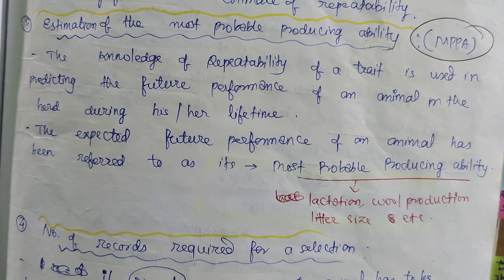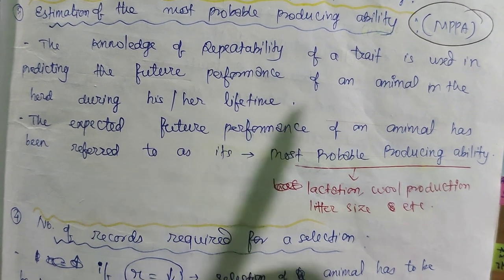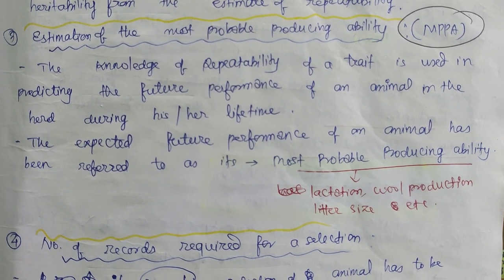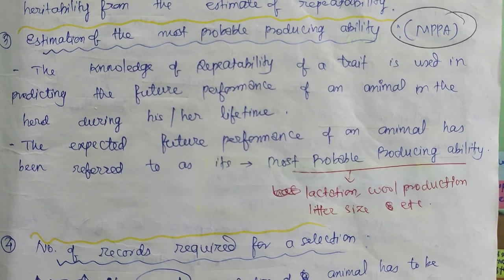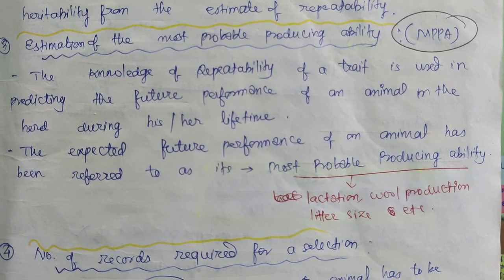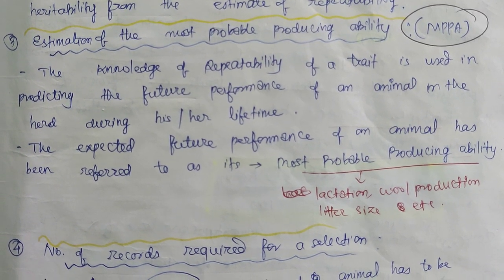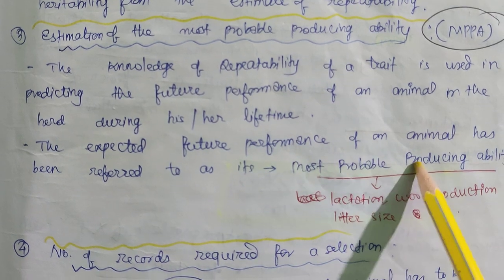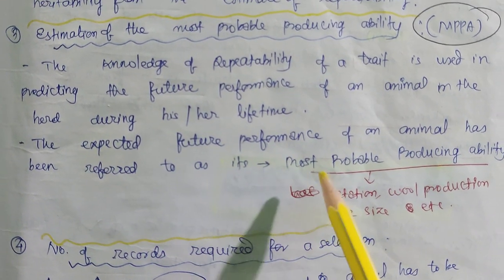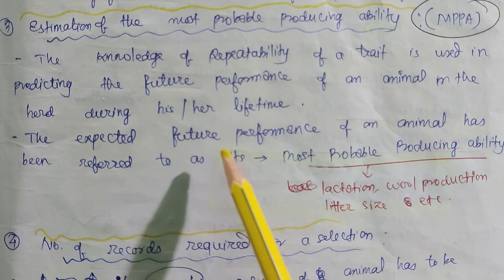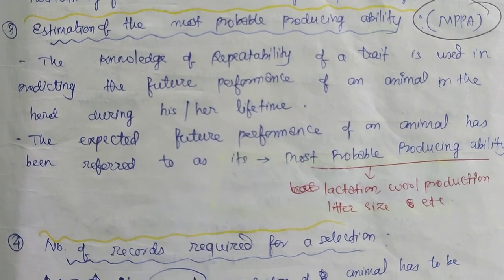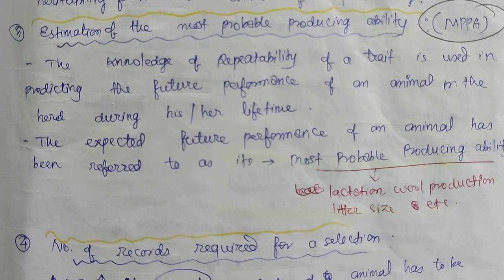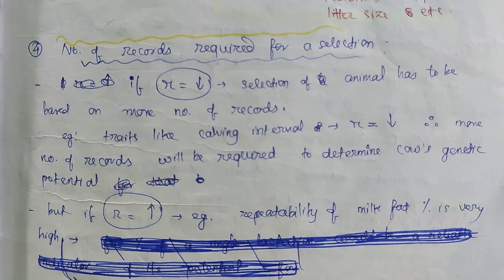The third usefulness is estimation of Most Probable Producing Ability (MPPA). From the name itself, we can guess that it involves the probability of expecting future performance from an animal. MPPA is defined as the expected future performance of an animal during its lifetime. Examples include lactation yield, wool production, litter size, etc.